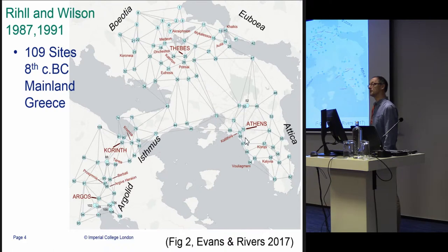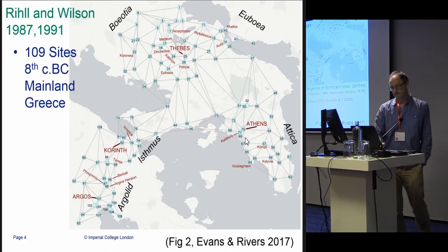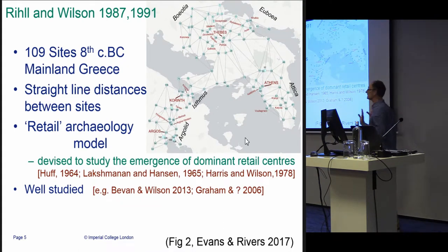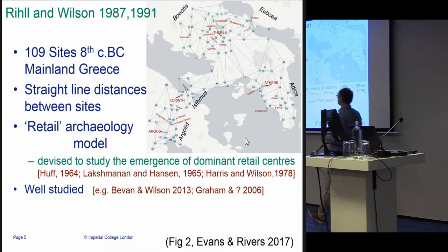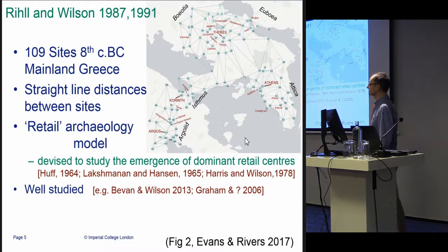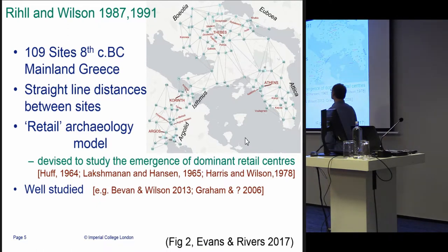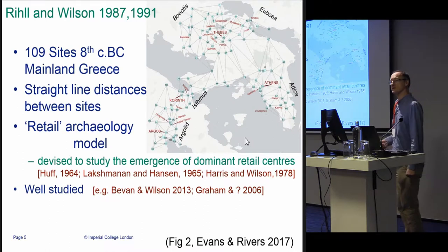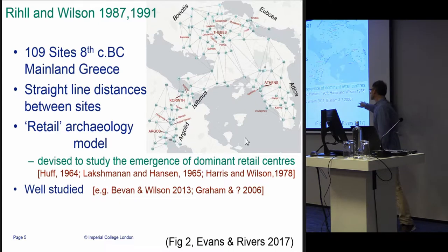Now, their analysis is in many ways very straightforward, very simple. They're putting very little information in. They just use straight-line distances between the different sites, and they use what Ray called a retail archaeology model because it came out of real studies of modern retail economics. Literally, this model was used commercially by Alan Wilson and others to help supermarkets locate future stores. So in one sense, this is a tried and tested model with real humans. It's a very simple model and it's been studied in other archaeological contexts.